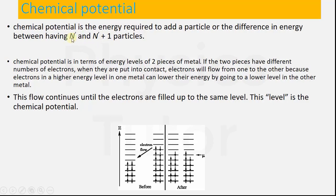This shows that when particles have n, their value will increase to a higher energy level. Chemical potential is in terms of energy levels of two pieces of metal. Here you can see two pieces of metal, and we will show chemical potential.